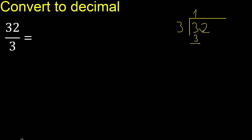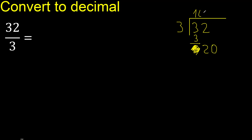3 minus 3 is 0. Next, bring down 2. 2 is less, therefore next — that is not a number, therefore always complete with 0. 2 numbers, therefore here 0 point 20. 3 multiplied by 7 is 21, which is greater.